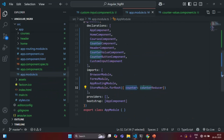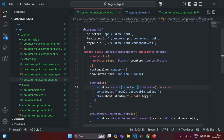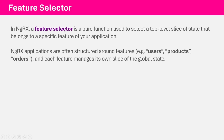If we change the name in the app module, first we will have to go to each component where we have subscribed to that state and change the name. But both of these issues we can overcome with the help of the feature selector concept in NGRX. In NGRX, a feature selector is a pure function used to select a top-level slice of state that belongs to a specific feature of your application. NGRX applications are often organized around features like users, products, orders, etc. Let's understand this practically.